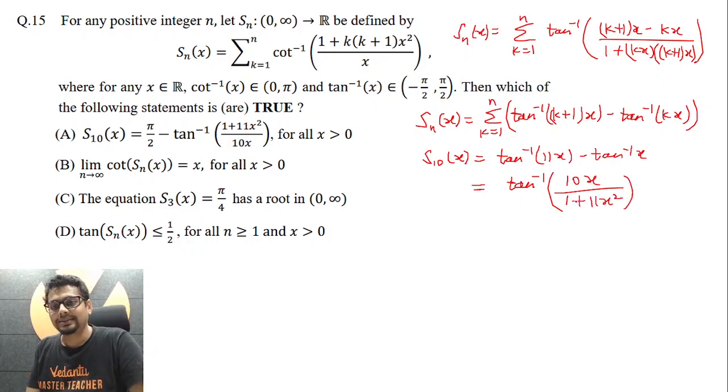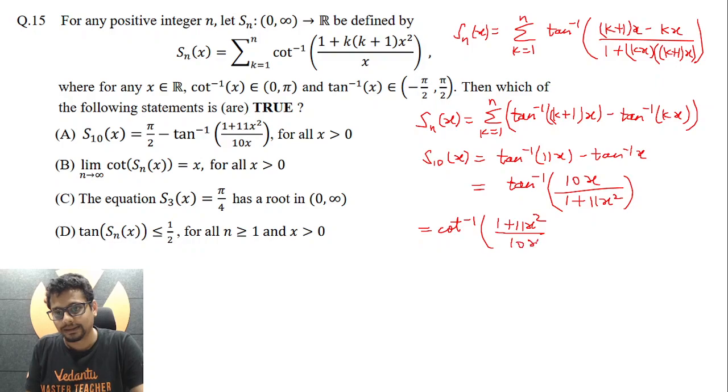Now again, 10x and this 1 plus 11x square, this whole expression essentially is positive. So you may write this as cot inverse (1 plus 11x square) by 10x. x is positive. So A is the correct answer.